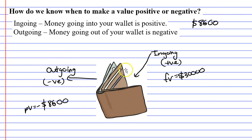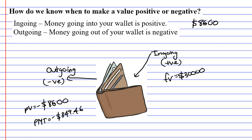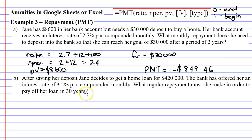At the end of each month, Jane takes $849.46 out of her wallet and puts it into her investment account. We need to remember that yes, it might be negative for Microsoft Excel or for Google Sheets, but when we're talking about questions like this in real life, we don't talk about repayments being negative.